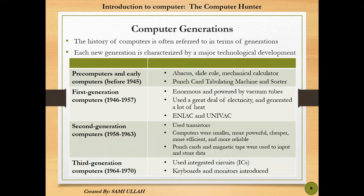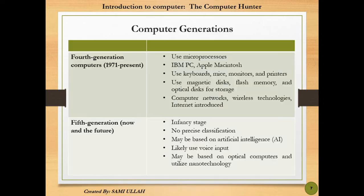Next is the third generation, from 1964 to 1970. In this generation, integrated circuits were used, and the keyboard and monitor were introduced. The fourth generation is from 1971 to the present, using microprocessors — including Apple Macintosh and IBM PC.